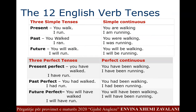English has 12 verb tenses. In this table you have all the verb tenses summarized: 3 simple tenses, 3 simple continuous tenses, 3 perfect tenses and 3 perfect continuous tenses.